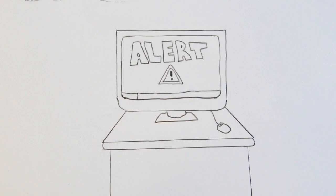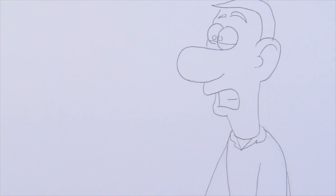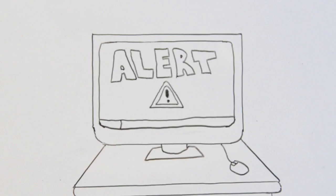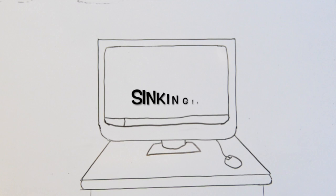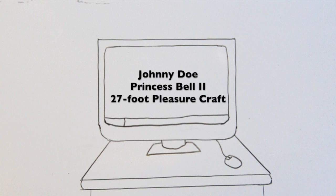A search and rescue watchstander will be alerted that there is a problem. The EPIRB will help the Coast Guard know where you are, and if you've registered it, they'll know additional information such as the description of your vessel.